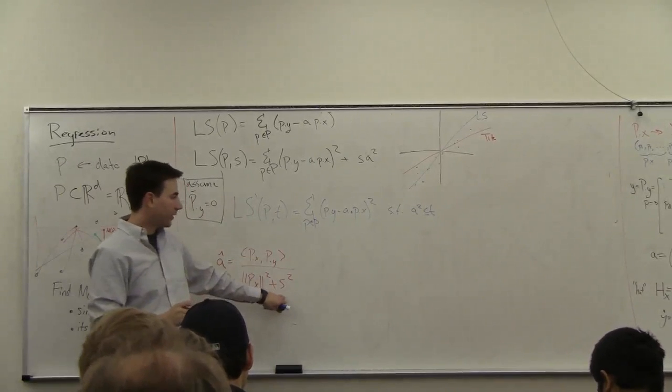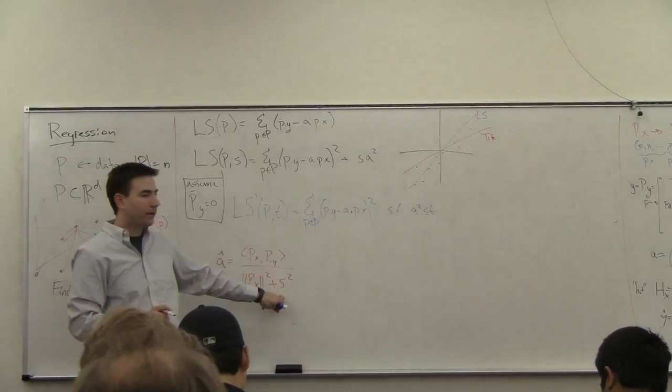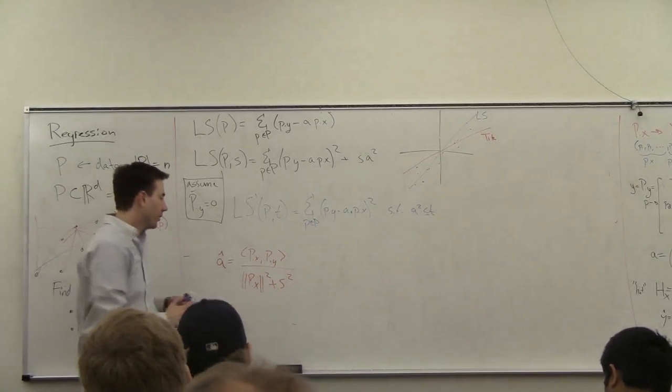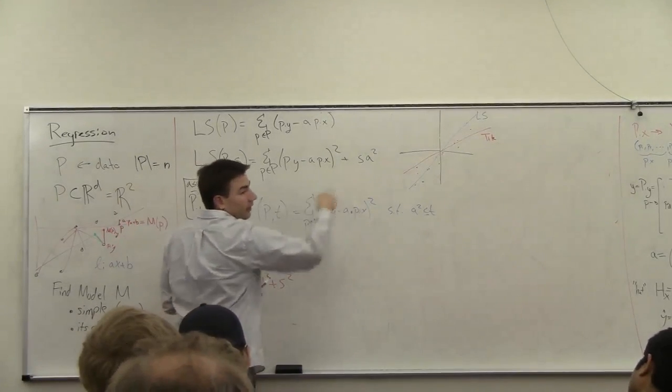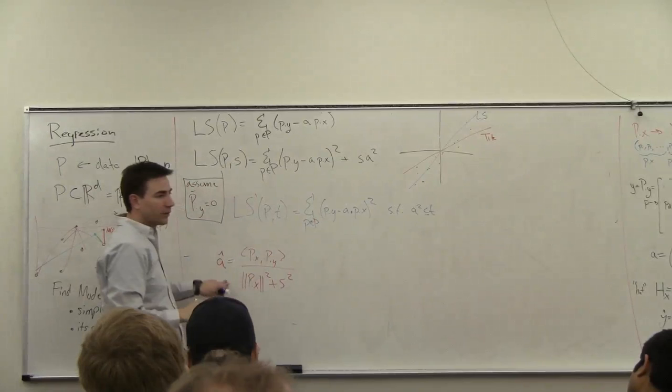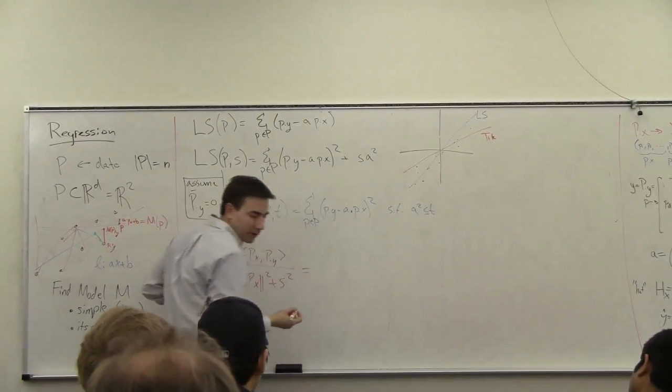Where you just have this s squared term here on the denominator. And so just for least squares, it was just this s squared term of zero. Right, which is if you put zero here.